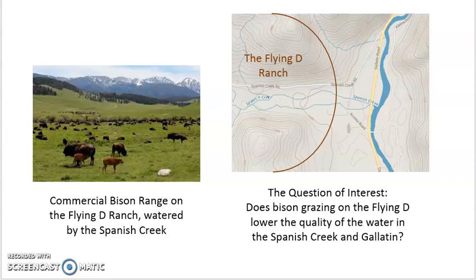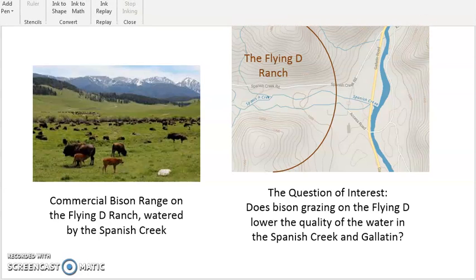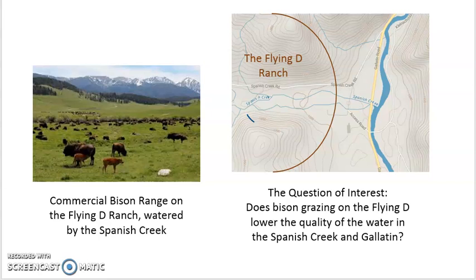On the Spanish Creek is a ranch, the Flying D Ranch, and on that ranch is a bison breeding operation. The bison breeding operation is located about in here on the Flying D.